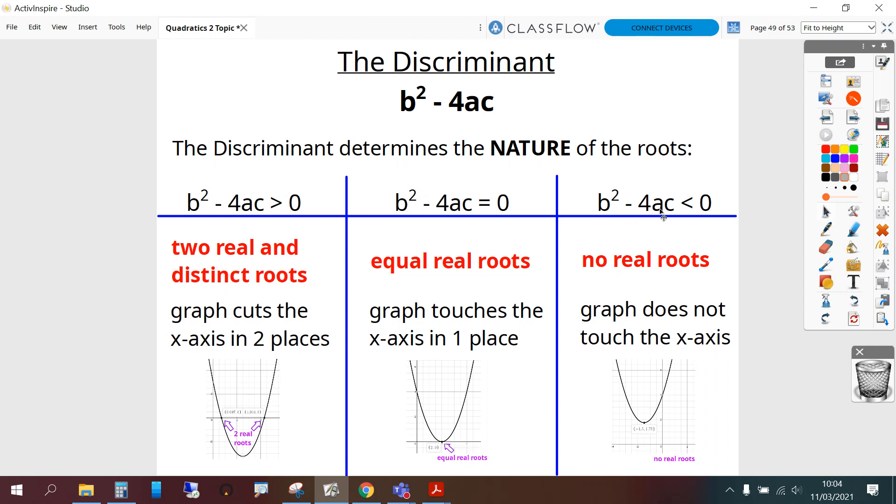When b squared minus 4ac is less than 0, i.e. negative, we get no real roots. The graph does not touch the x-axis.